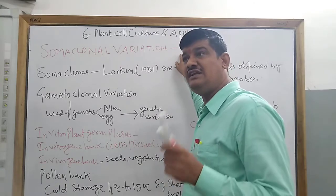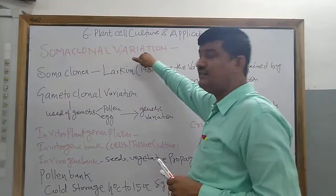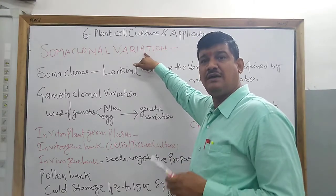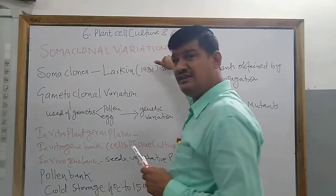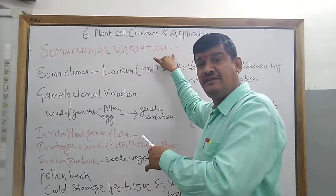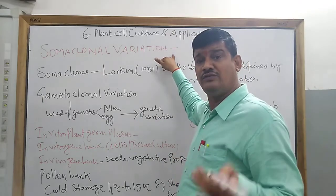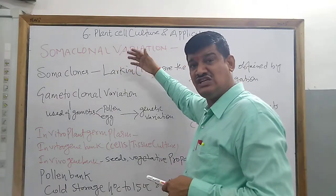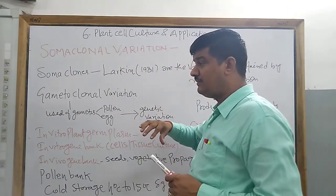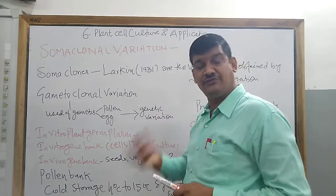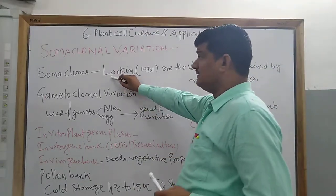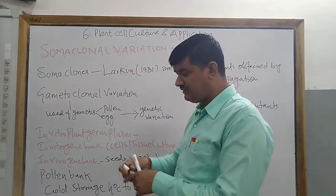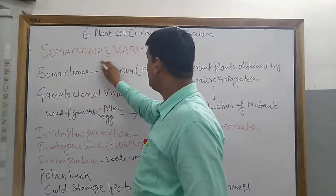Somaclonal variation is a type of genetic variation in the progeny which is produced by tissue culture or micropropagation technique. These plants have some genetic variation which is not present in the cells from where they were obtained. These gradual genetic changes take place when the plant is produced by in vitro technique. Somaclones were first introduced by Larkin in 1981.